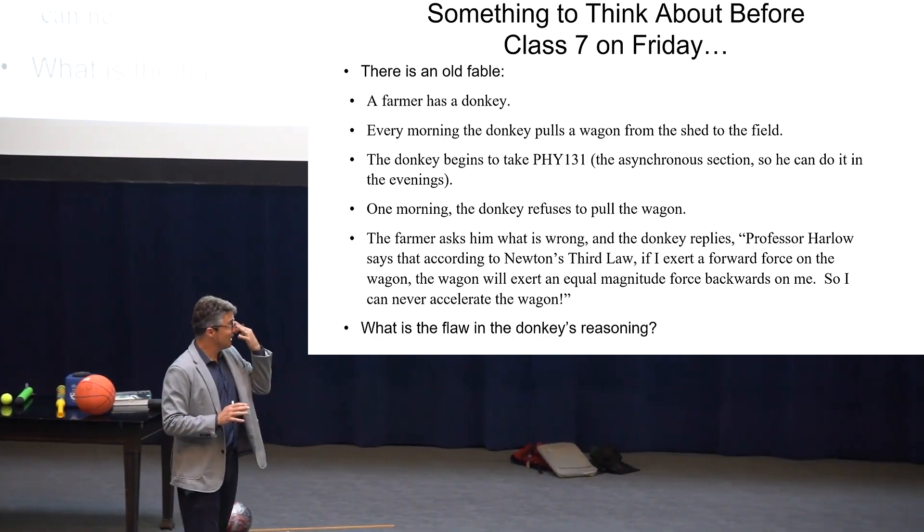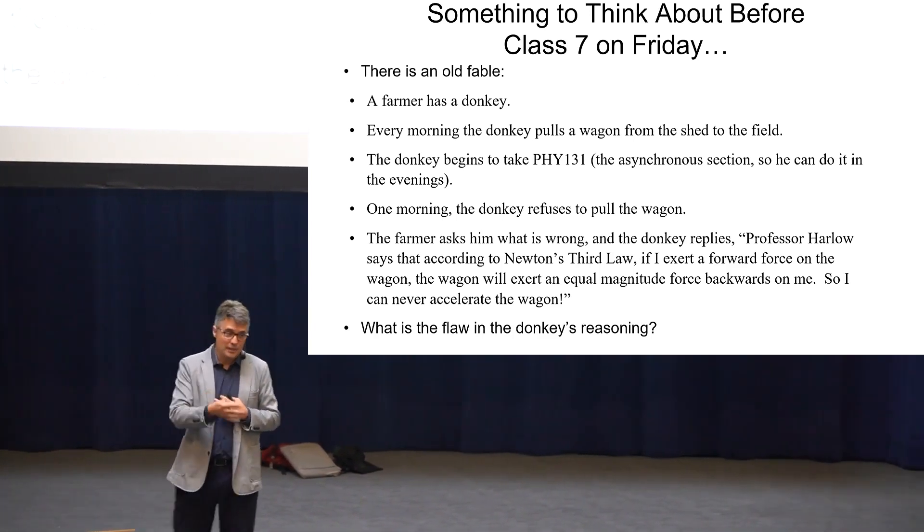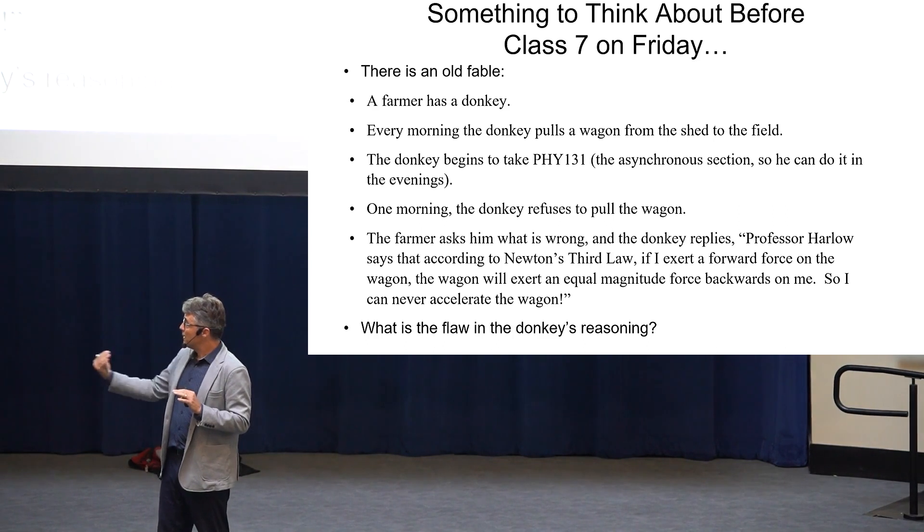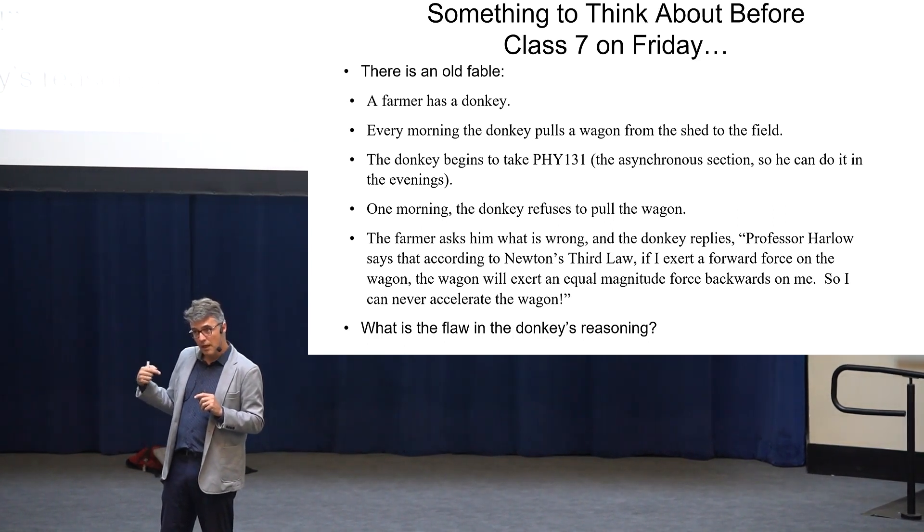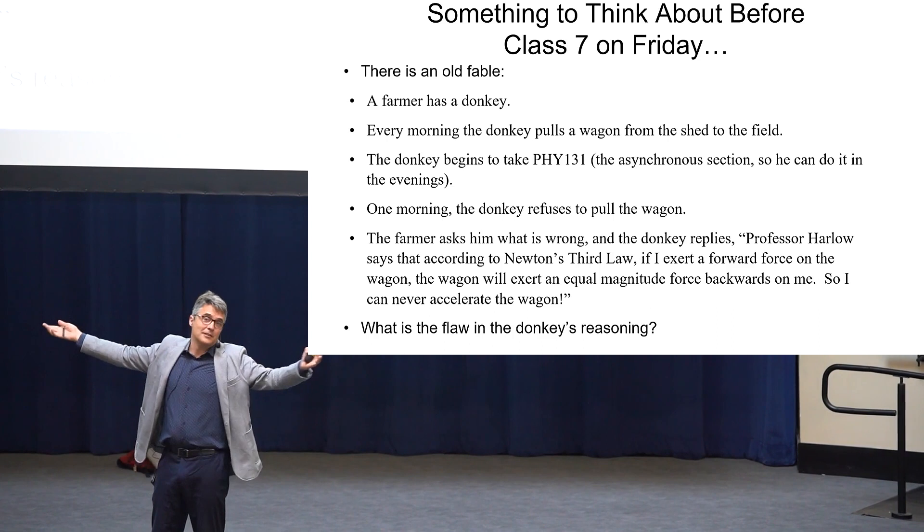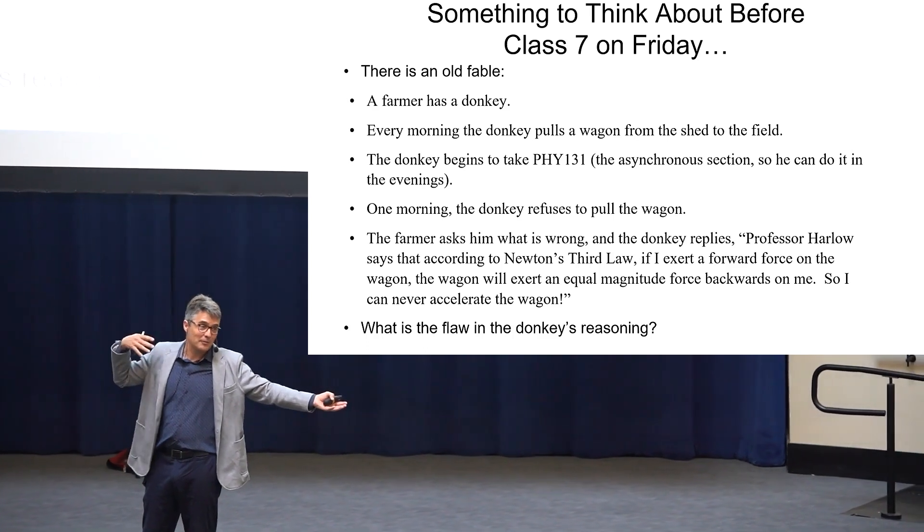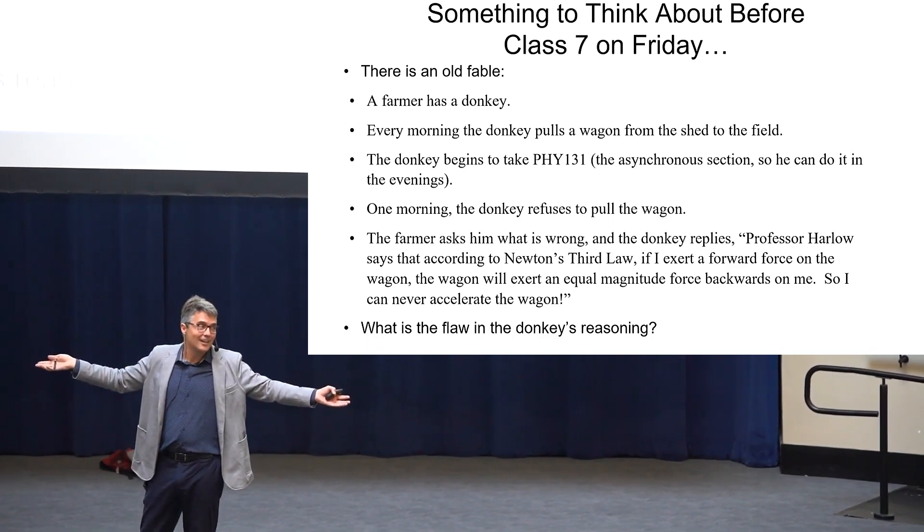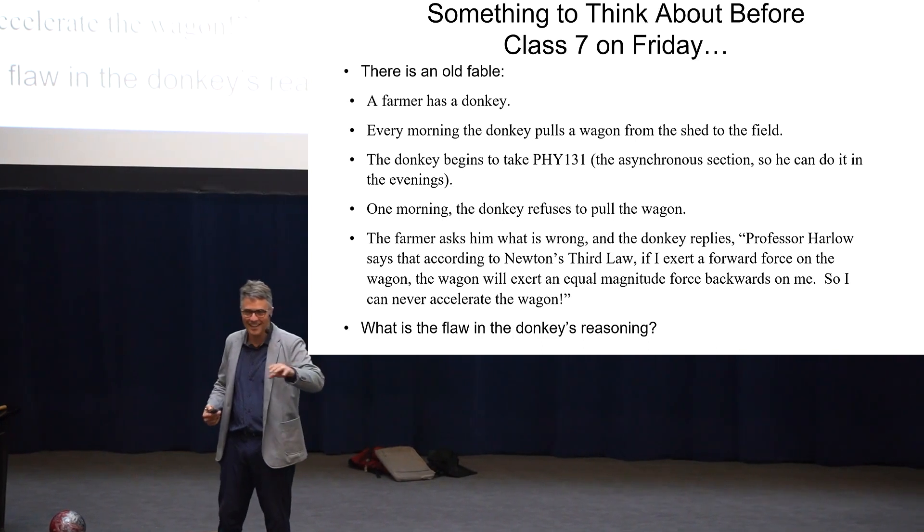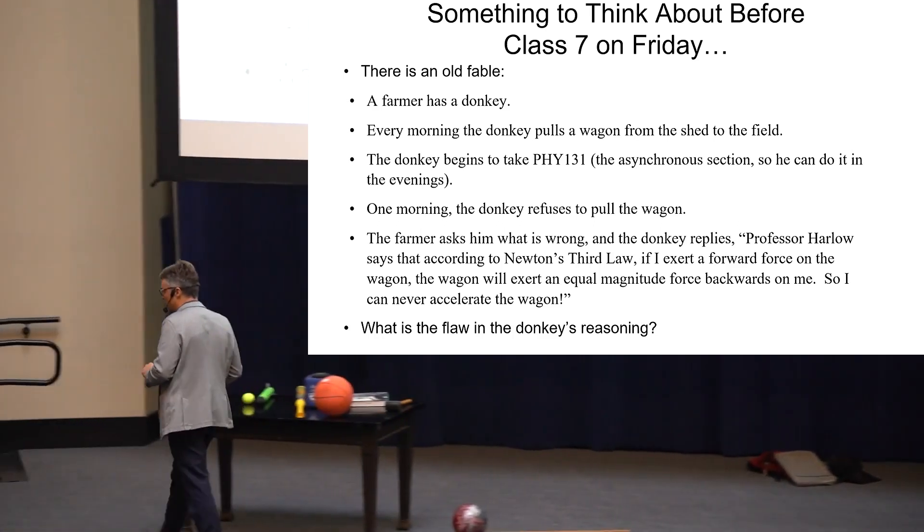Here's a little joke. A farmer has a donkey. Every morning the donkey pulls a wagon from the shed to the field. But then the donkey enrolls in Physics 131 and learns Newton's third law, which is that if the donkey exerts a forward force on the wagon, then the wagon will exert an equal and opposite force backwards on the donkey. So the donkey refuses to pull the wagon with the reasoning, what's the point? If I pull forward on the wagon, the wagon will pull backwards with an equal and opposite force on me, so I'll never be able to accelerate that wagon. So think about that. I'll give you the answer on Friday. What is the flaw in the donkey's reasoning? Thanks for your patience. I'll see you Friday.